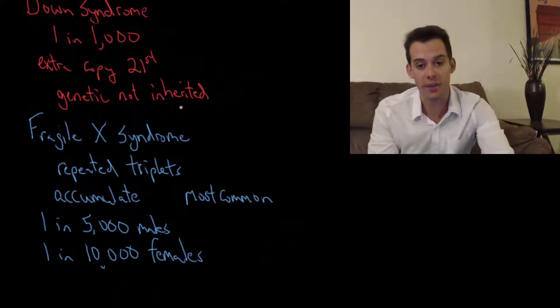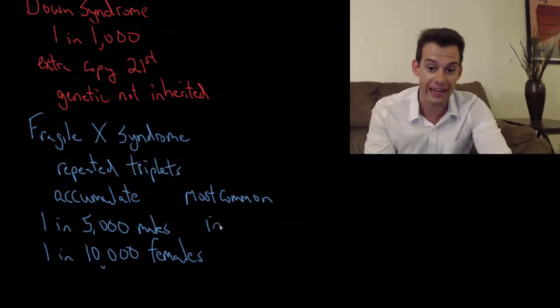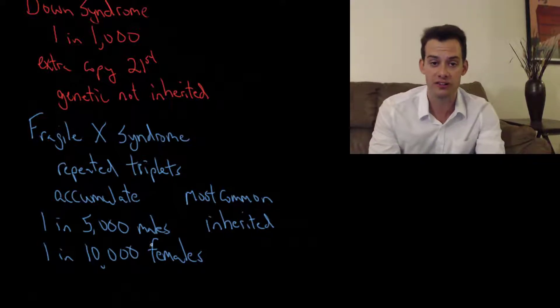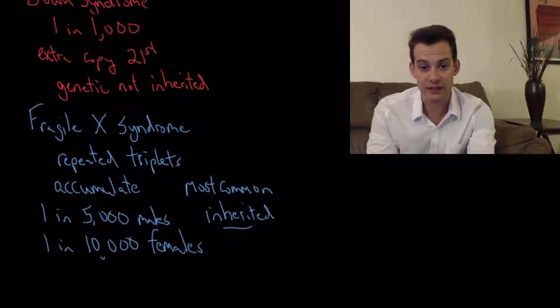Again it's not as common as Down syndrome but I'm saying most common inherited because this is passed down through generations. These repeated triplets build up through successive generations. So it's the most common inherited cause of intellectual disability and it's much more common in males. Okay, so that's Fragile X syndrome.